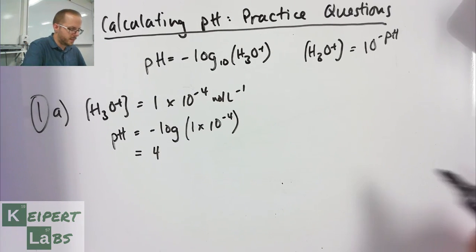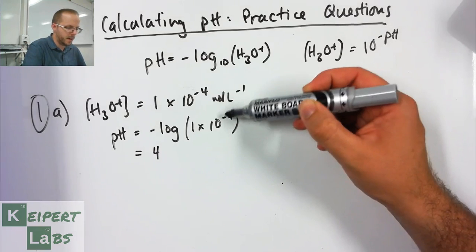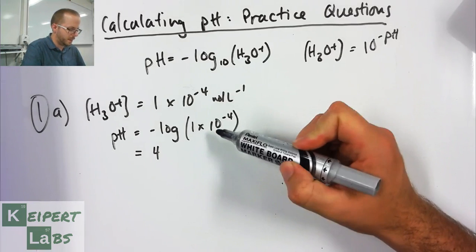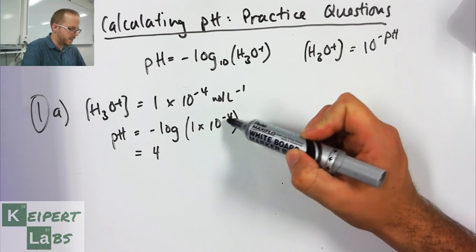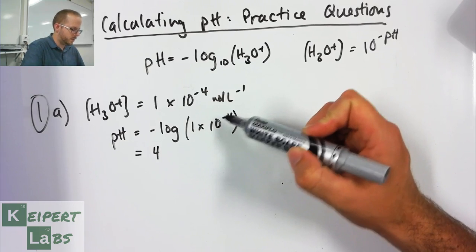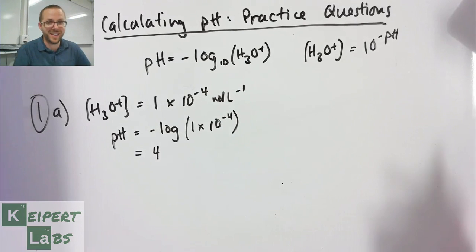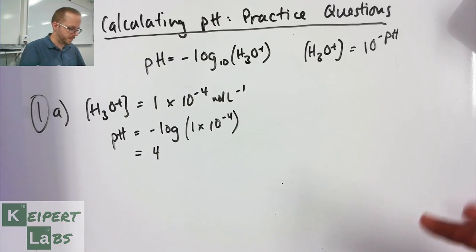You can see that it stems from this number here. When we've got some number which is basically a power of 10, then it's just the minus of this thing. So pH of 4. I didn't actually need to calculate that one to work it out, not because I'm smart but because it's quite straightforward.